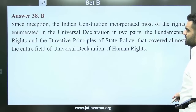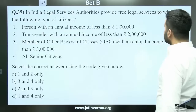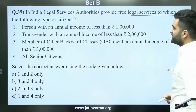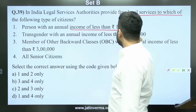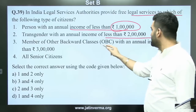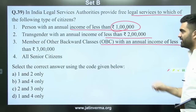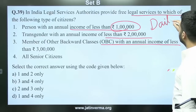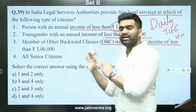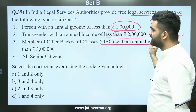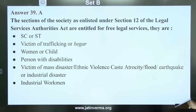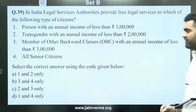Question 39: In India, the Legal Services Authority Act of 1987 provides free legal services to which types of citizens? Options include: those whose annual income is less than Rs. 10,000; transgender persons with annual income less than Rs. 2 lakh; and members of OBC with annual income less than Rs. 3 lakh. The answer is A — 1 and 2 only. This was covered in the background analysis during discussions on the Transgender Bill.